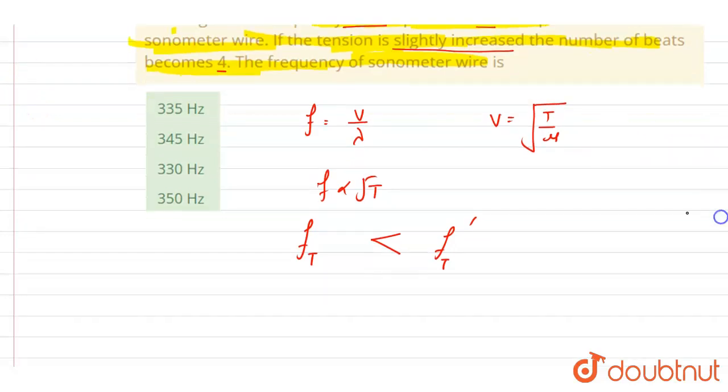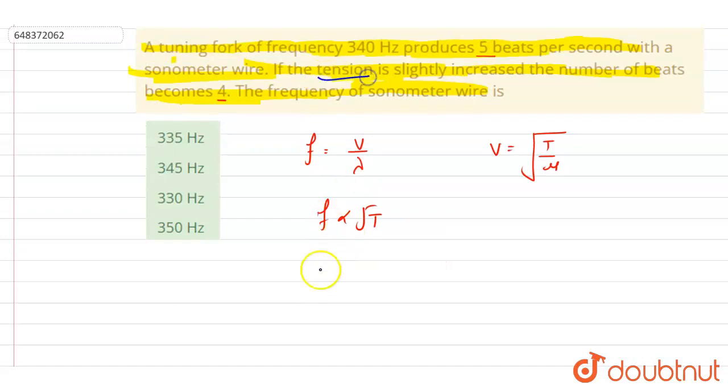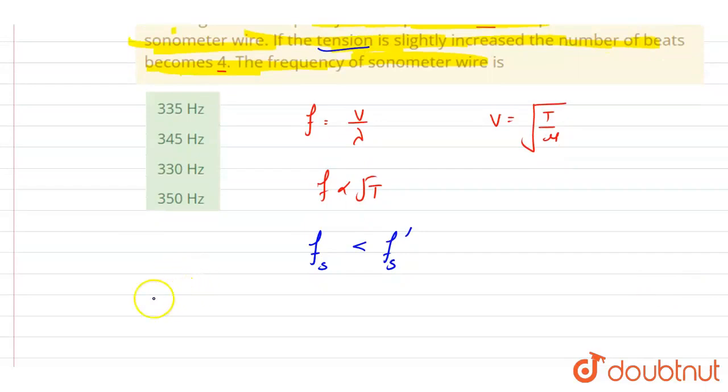So f' will be more, the changed frequency will be more, and the tuning fork frequency will remain the same. If you see, I take two cases: first one is this and second one is this. Let's say in the first case that the frequency of the tuning fork is more and frequency of the sonometer wire is less. Let us check what will happen when we increase this.